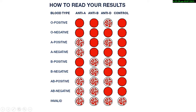Anti-D defines the blood group as positive or negative. If there is agglutination on anti-D, it means the sample is positive. For O positive blood group, there is no agglutination on anti-A and anti-B, only agglutination on anti-D, so we can say the blood group is positive.